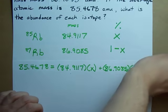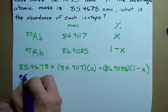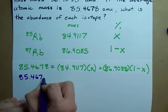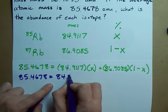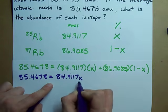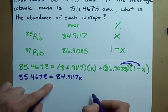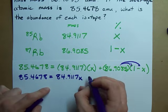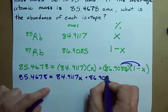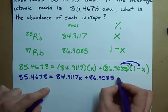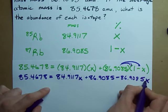Make sure you plug in the number you're given for the average atomic mass. Now you just have to solve it algebra style. In this case, 85.4678 is 84.9117 X, and you have to distribute the 86 through the brackets.